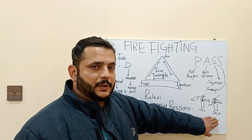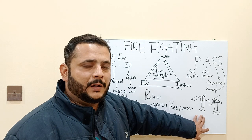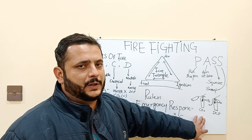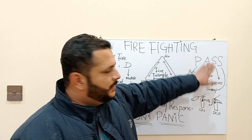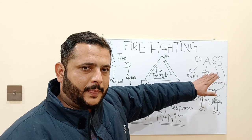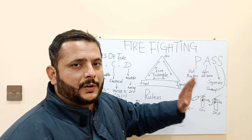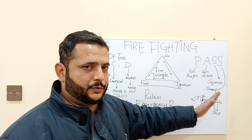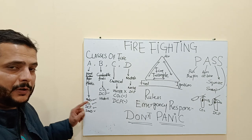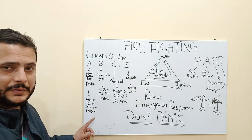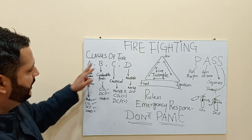The extinguishing media includes DCP (dry chemical powder), CO2 type fire extinguisher, water, sand, and blanketing. These types of extinguishing media are helpful in extinguishing fire. I will let you know how to operate a fire extinguisher and then go into the details. Different classes of fire have different extinguishing media. For Class A type fire, you can utilize water, CO2, dry chemical powder, and sand.